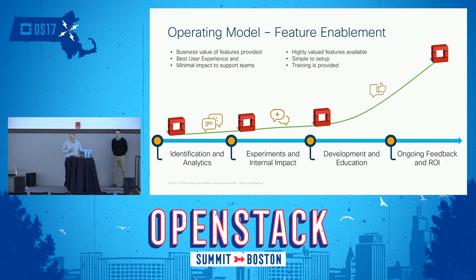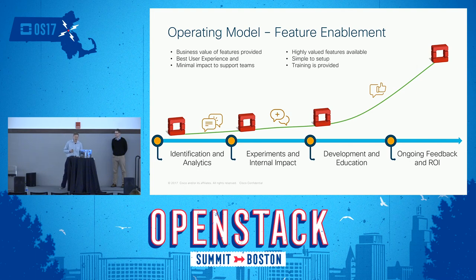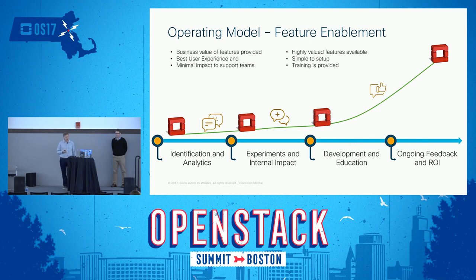We run a growth hacking funnel approach. We spend a lot of time identifying what our clients need, analyzing what they currently use and what we think they'll use in the future, then we get our feature list. At that point, we don't just say 'you want feature X, come back in six months.' Instead, we run something we call minimum viable experiments — taking the feature early, putting it into a lab environment, working with the client to take their feedback.